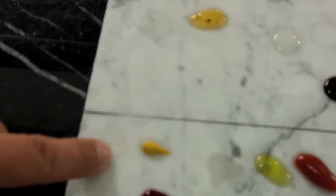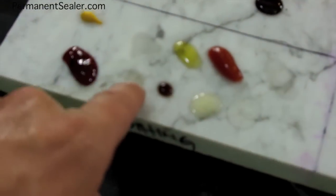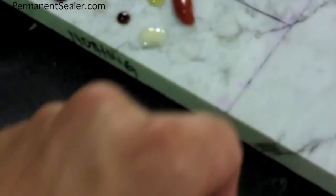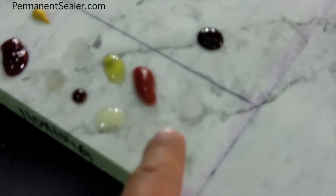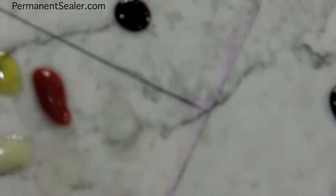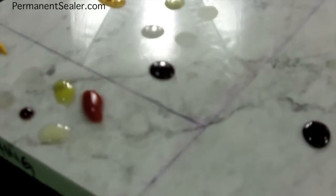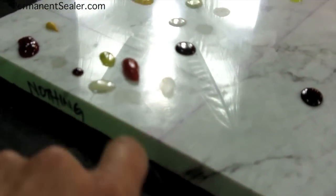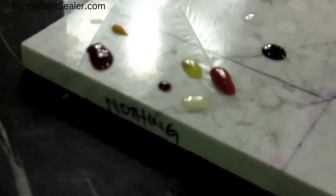You have the mustard right there, stain and an etch. That is the ketchup over there. Same thing, you can see the stain as you look over it. As you angle the light, bring it all the way down, you can see nice big etch right there. All the other etches—that was the grape jelly right there.